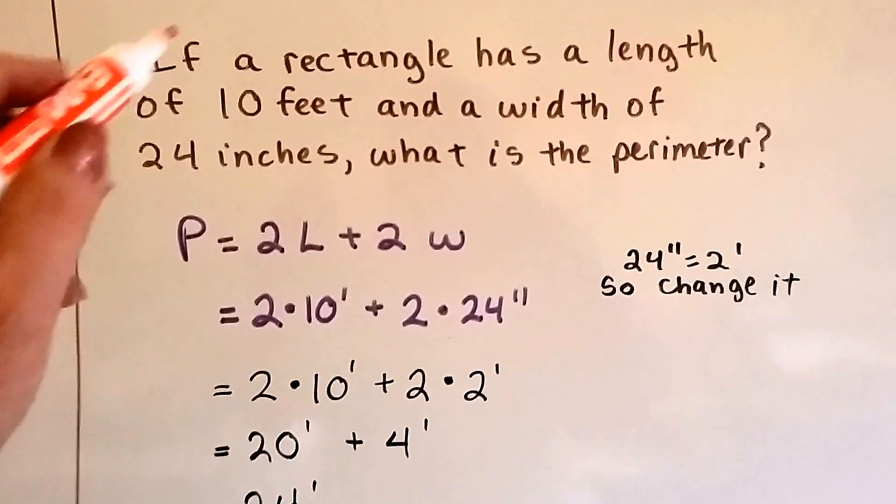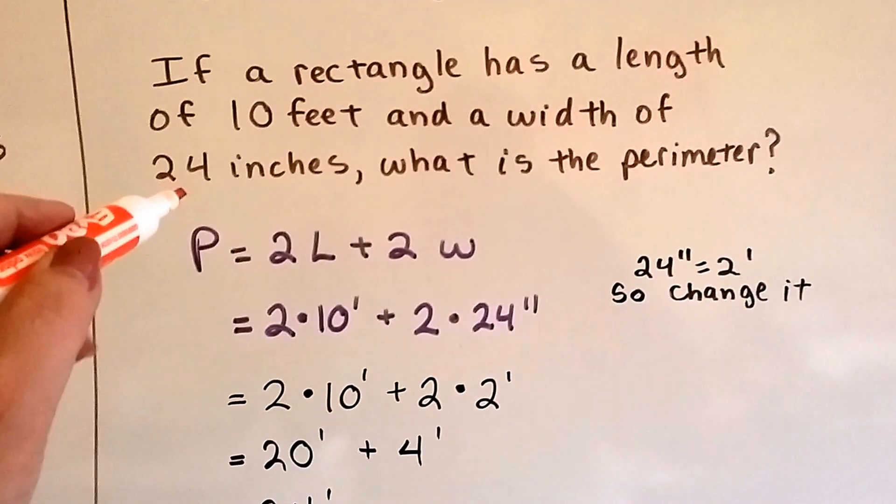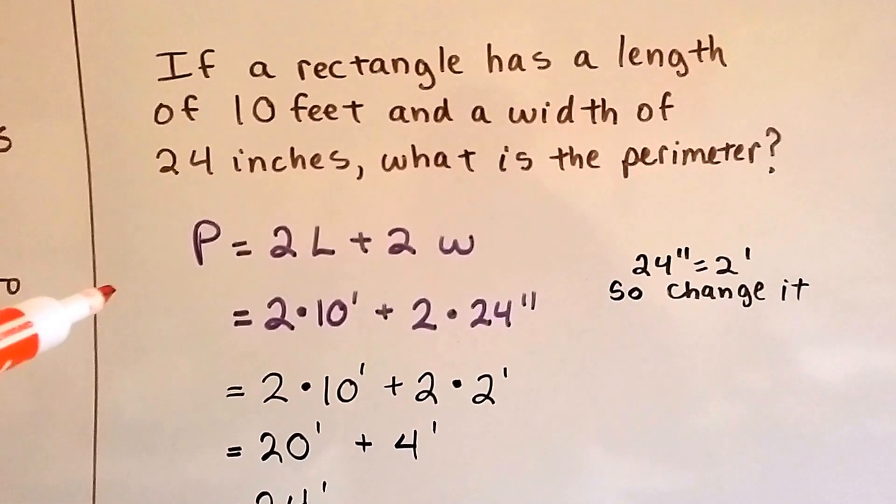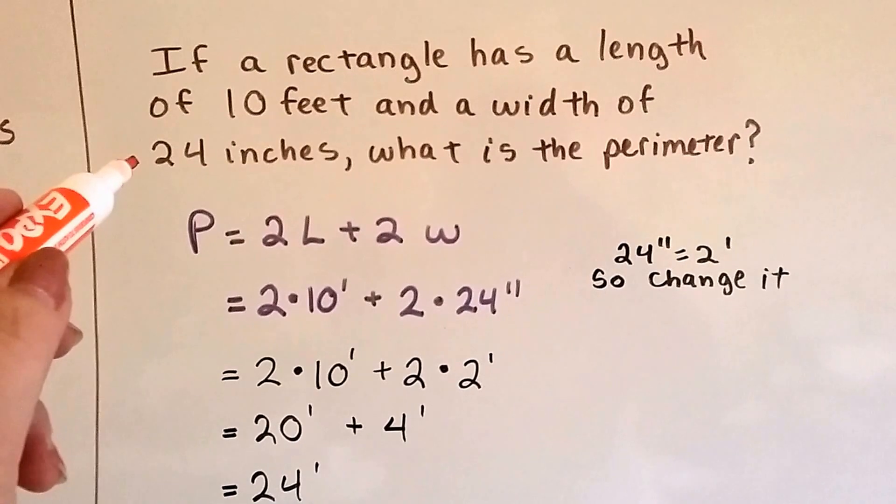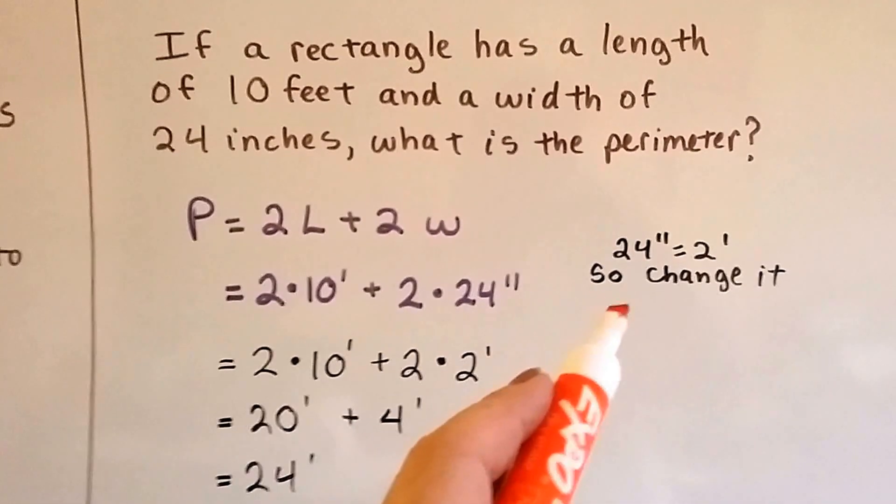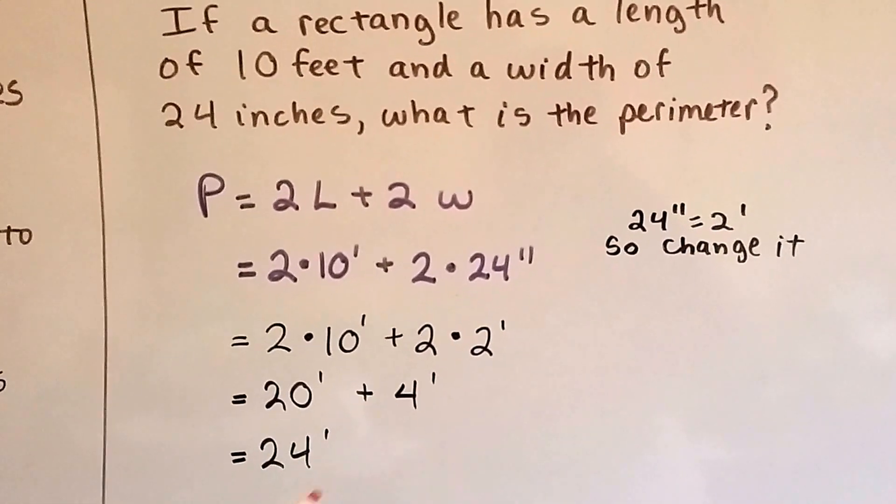So we can see that it's got 10 feet and 24 inches, and those are different increments. So because 24 inches, 12 inches and 12 inches makes 2 feet, that's 24, we can just change the 24 inches to 2 feet. That's easy.